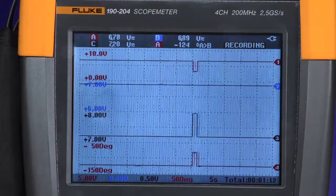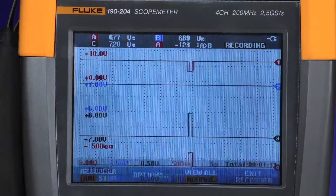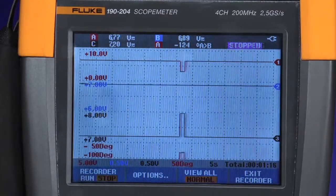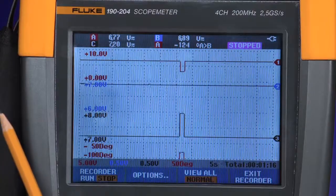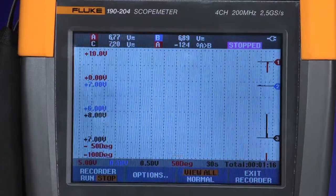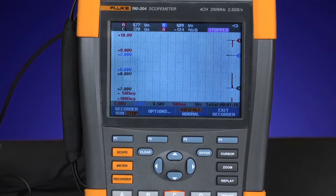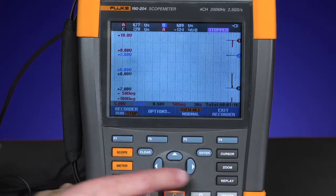Once you return to the scope meter, go back to recorder mode and press stop. To view the entire record, simply press the view all mode. Now you can look at the entire record across the width of the screen.